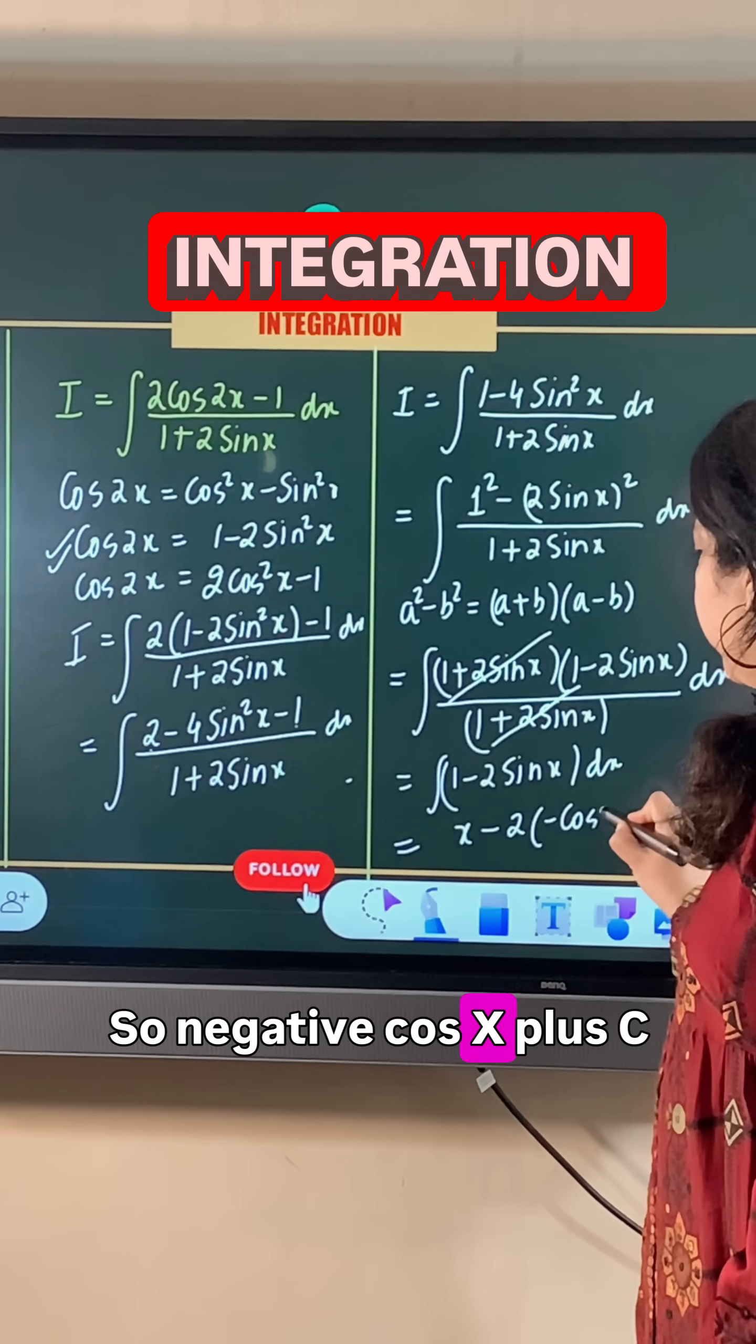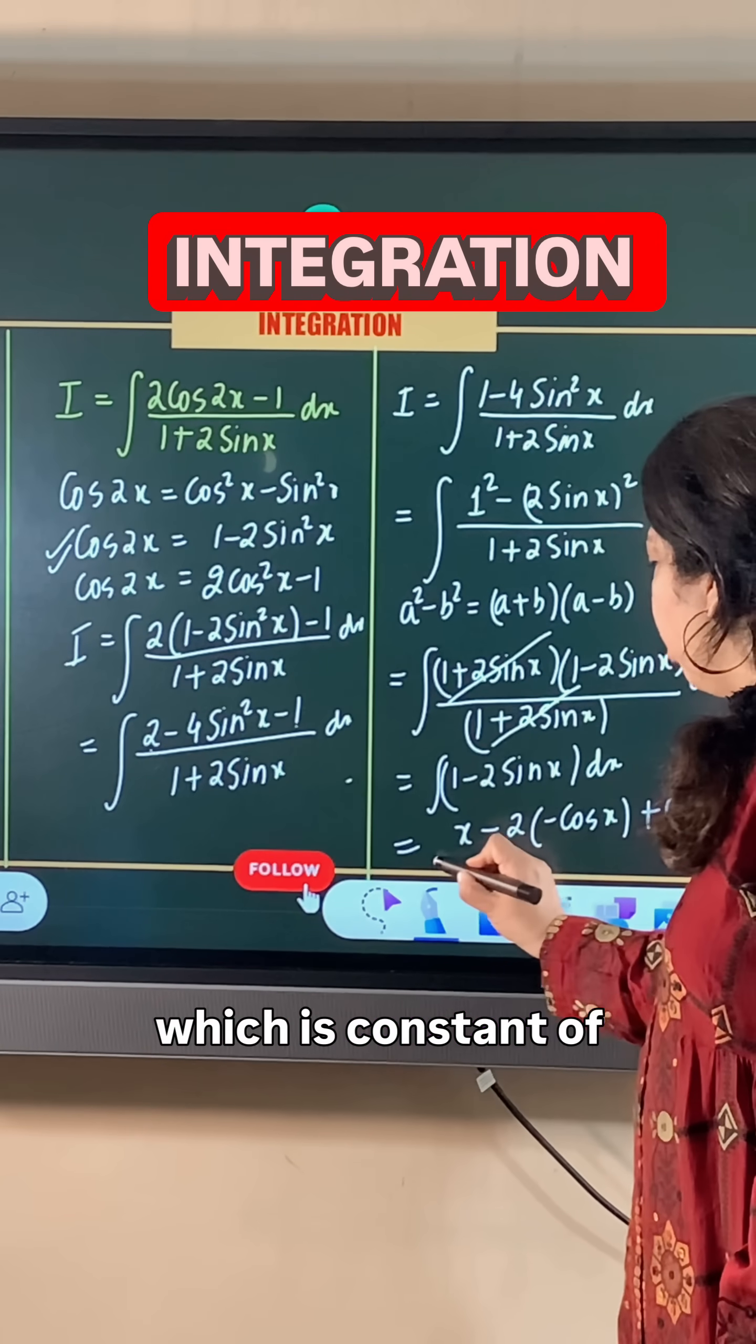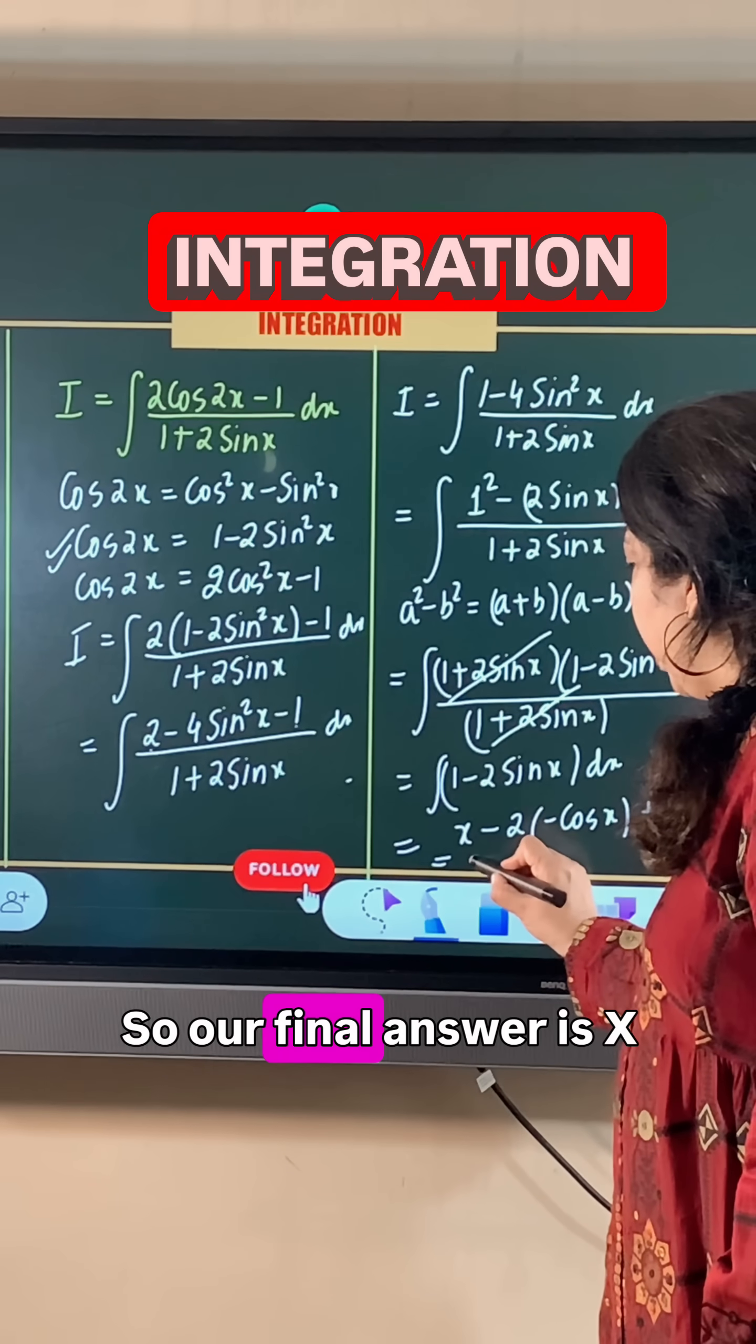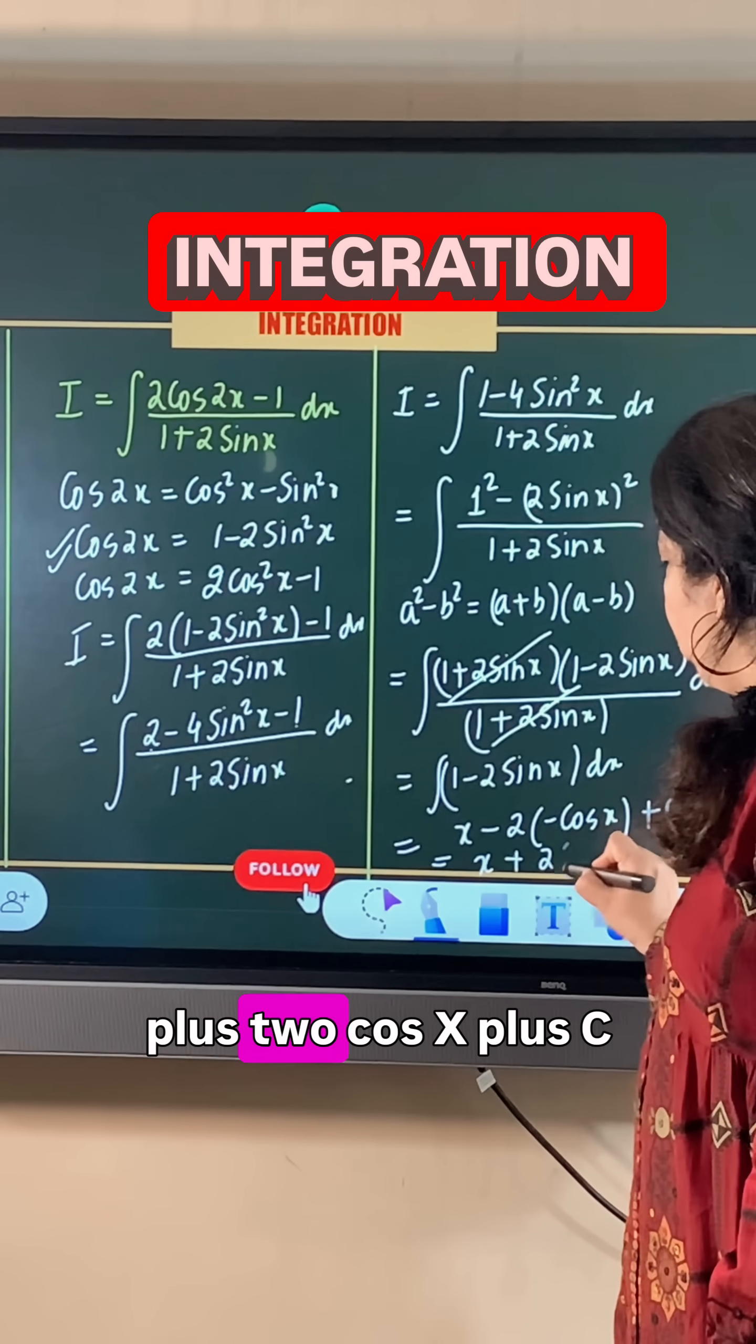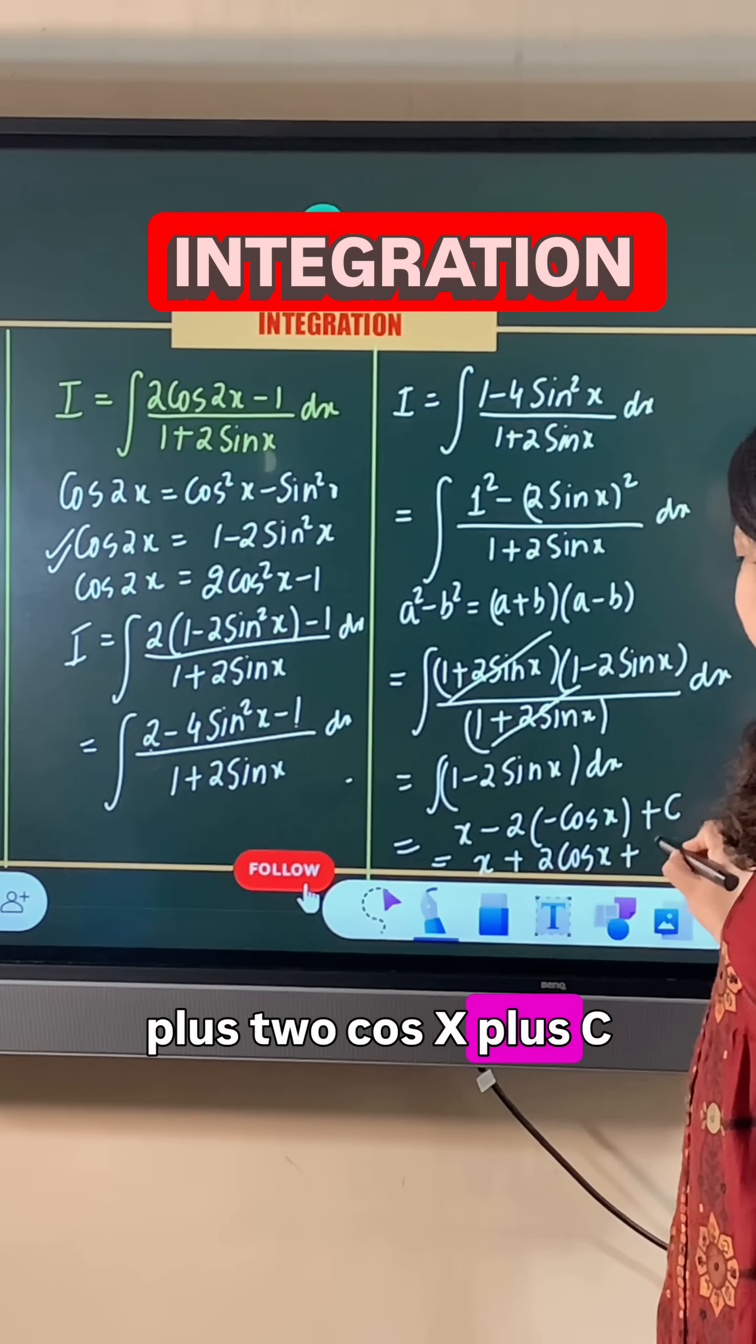Since the negative and 2 give us +2cosx, our final answer is x + 2cosx + c, where c is the constant of integration.